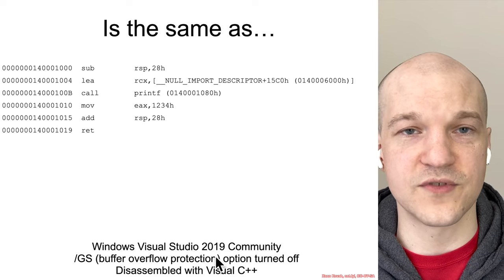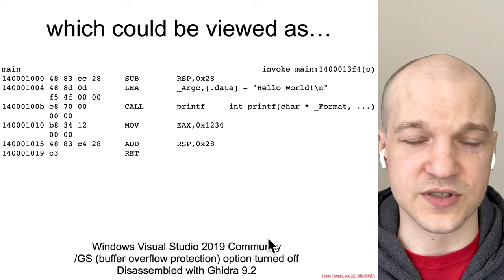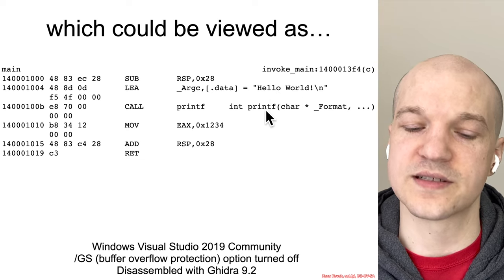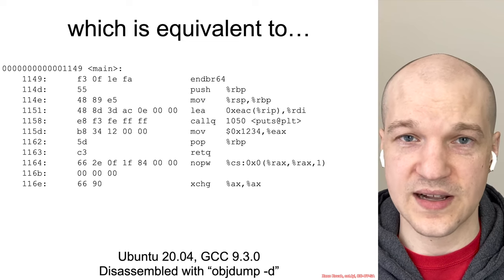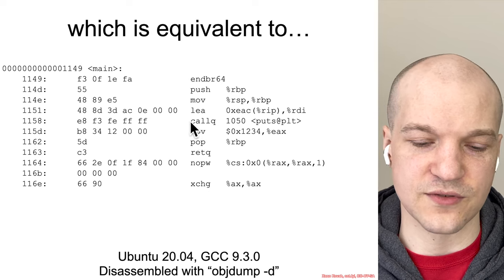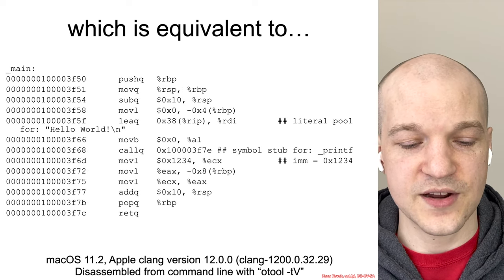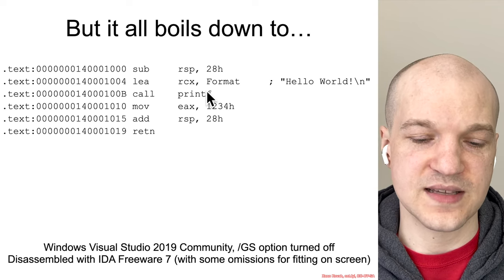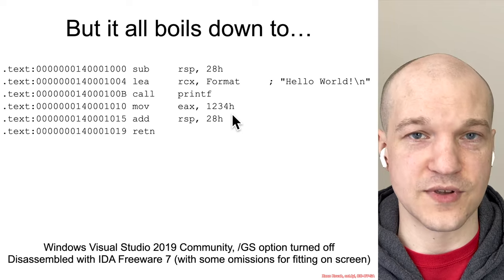That same assembly disassembled right from within Visual Studio can also be seen in completely different formats. For example, if you learn about the Ghidra multi-tool for disassembly and decompilation, that same assembly would look different — with a clearer view of the hello world string, printf, and the 0x1234. The same hello world compiled on Ubuntu with GCC or on macOS 11 with clang could have extra assembly instructions, be longer or shorter, but still ultimately boils down to the hello world string being printf'd and 0x1234 being set as the return value.